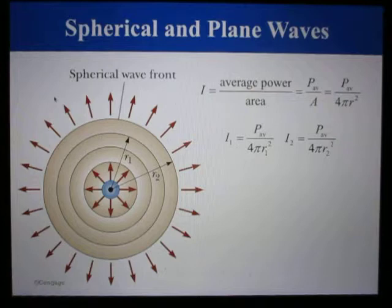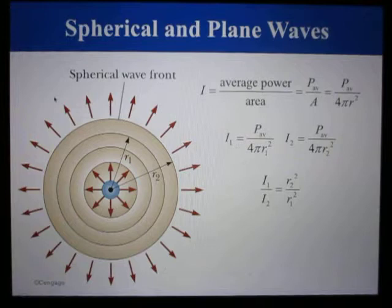Here are the equations for the intensities at distances r₁ and r₂ from the center of the source. We can calculate the ratio of the intensities at these two spherical distant surfaces.